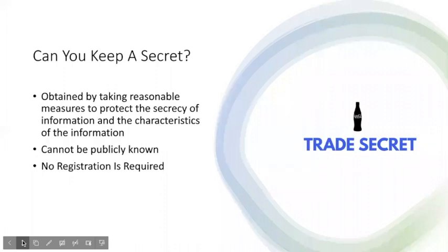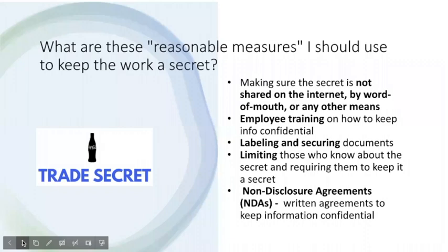That brings us to our fourth type of IP tool: trade secrets. So what exactly is a trade secret? It's a type of protection obtained by taking reasonable measures to protect the secrecy of information. The specific information or secret cannot be publicly known and must have economic value. Because it must remain a secret, no registration is needed. If information has to remain a secret, how can a business use the information or benefit from it? The answer is that simply keeping the secret to yourself is not the only way of maintaining secrecy. Businesses commonly use non-disclosure agreements to protect information from being released. An NDA is a contract that usually states the type of information to be shared between the parties in the agreement and what specific uses of the information are permissible.